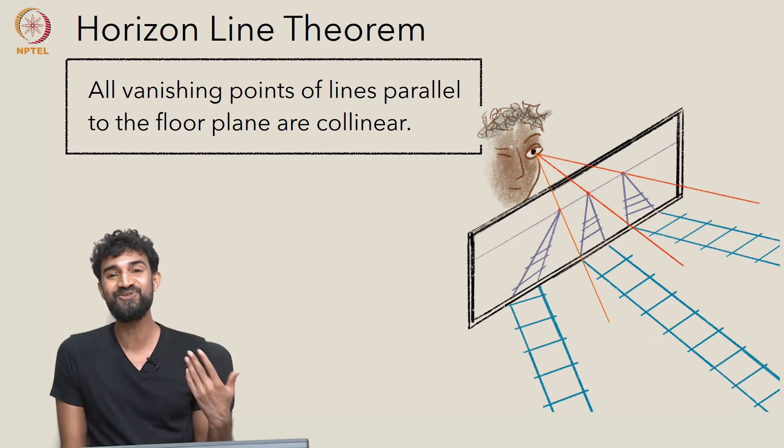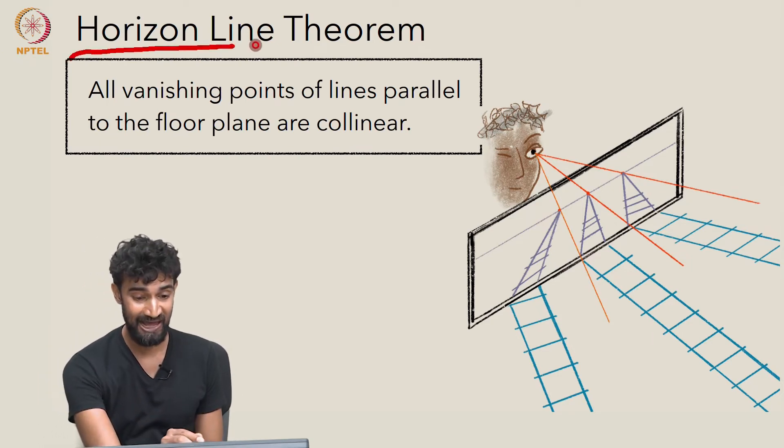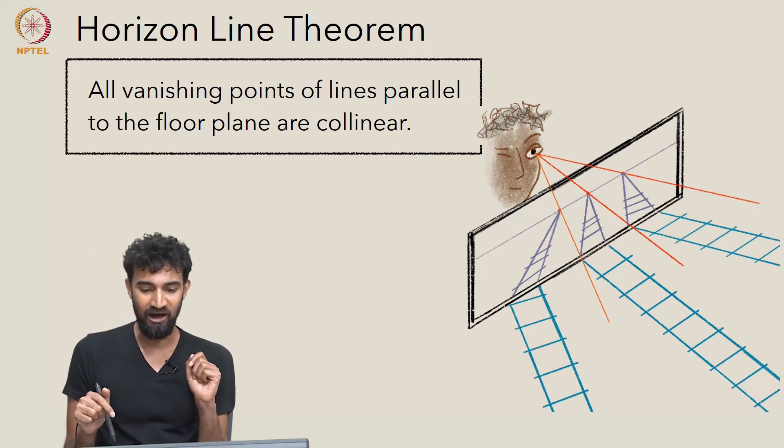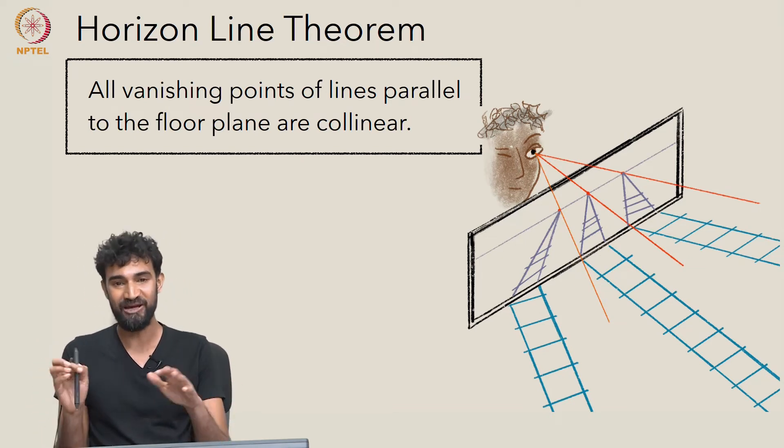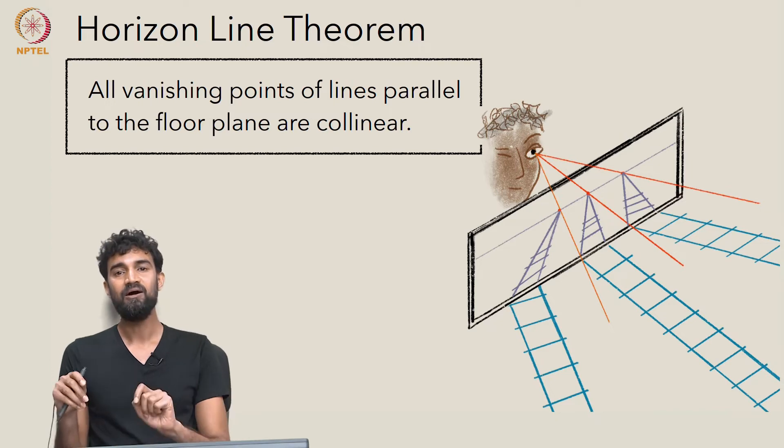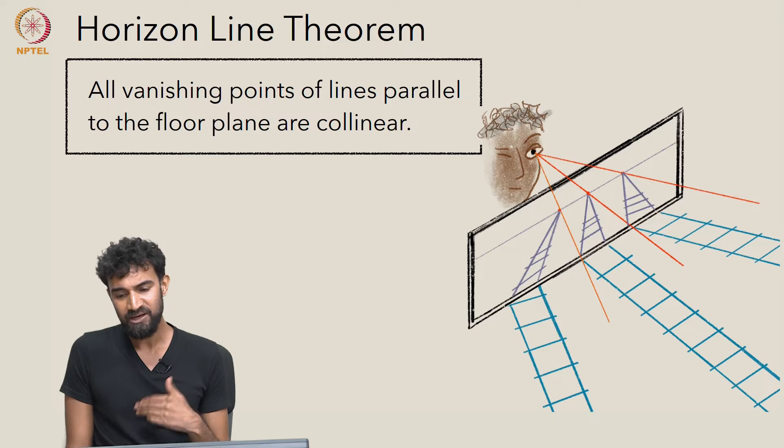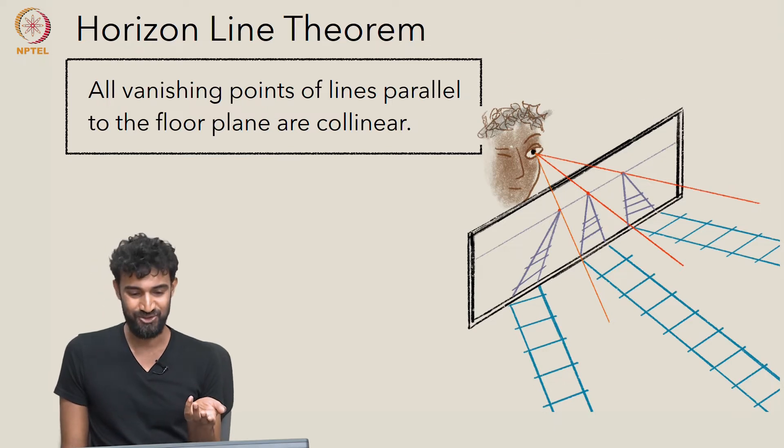And that brings us to the next theorem, which is the horizon line theorem, which states that all vanishing points of all lines parallel to the floor plane are all going to be collinear. That's the content of the horizon line theorem. Now, the question is, why is it true?